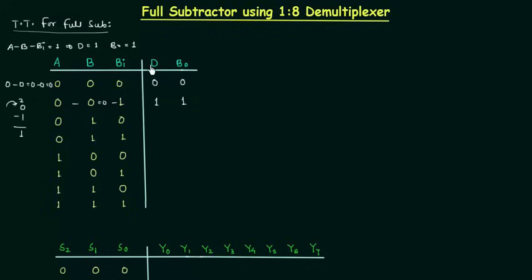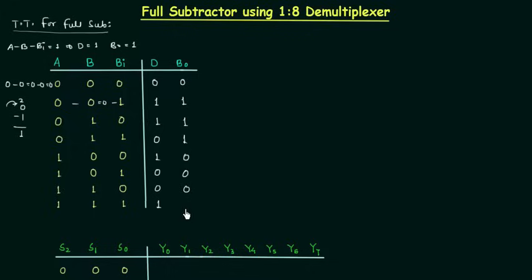I will now write down the values for difference and borrow output quickly. For difference the values are: 0, 1, 1, 0, 1, 0, 0, 1, and for borrow output: 0, 1, 1, 1, 0, 0, 0, 1. This is how the completed truth table looks.